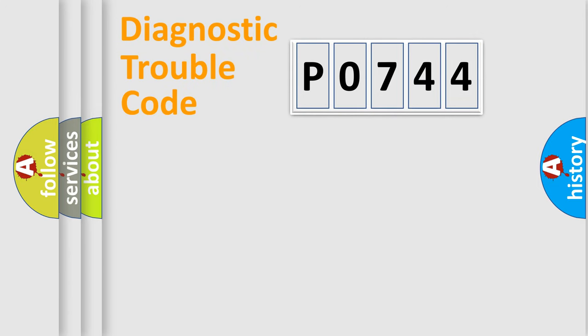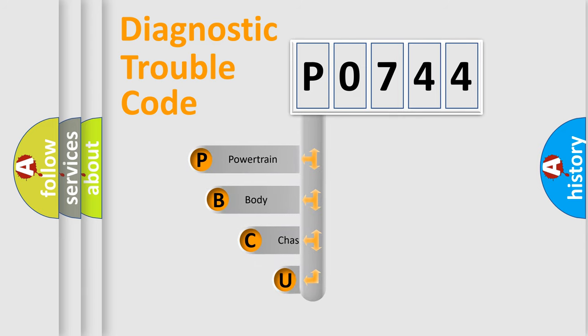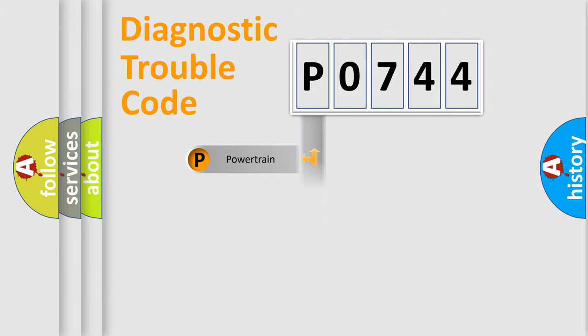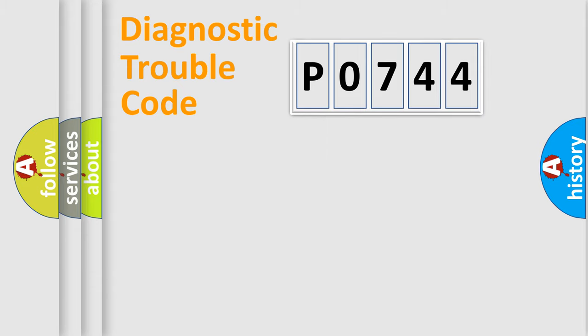Let's do this. First, let's look at the history of diagnostic fault code composition according to the OBD2 protocol, which is unified for all automakers since 2000. We divide the electric system of the automobile into four basic units: Powertrain, Body, Chassis, and Network.